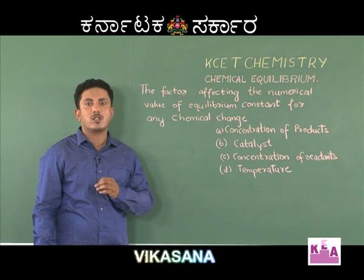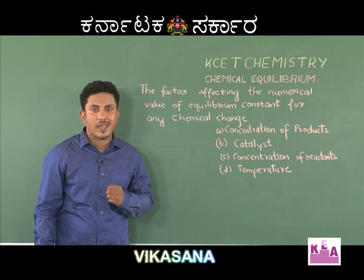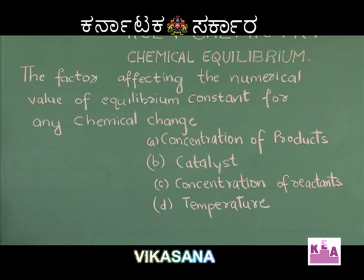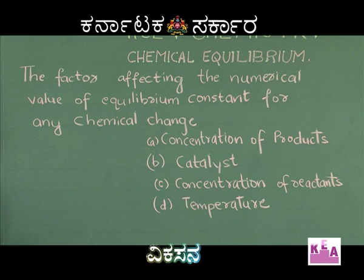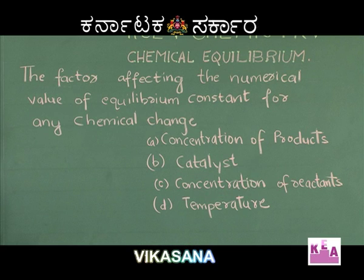This is a question related to the characteristic of an equilibrium constant. The question is: what are the factors affecting the numerical value of the equilibrium constant for any chemical change? Option A is concentration of product. Option B is catalyst. Option C is concentration of reactant. Option D is temperature.